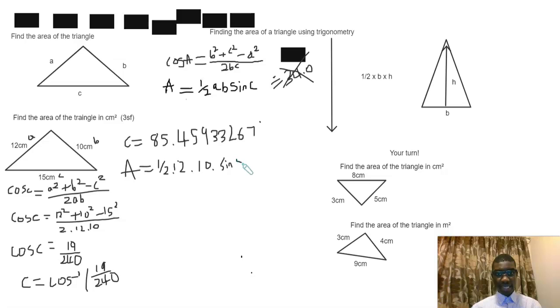B is 10, so half × 12 × 10 × sin of 85.4593267, and that would give you 59.8.